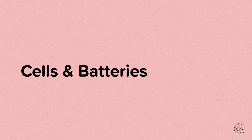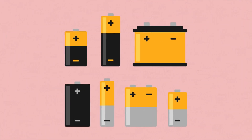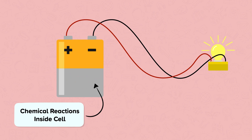In this nugget, we'll be looking at cells and batteries. These are chemical cells. Chemical cells store energy and can be used to generate electricity within a circuit. Chemical reactions inside a cell create a potential difference that produces an electrical current. This is referred to as electricity.